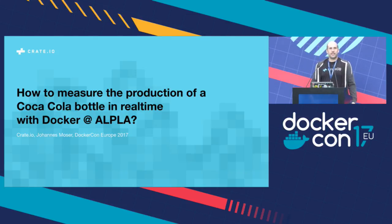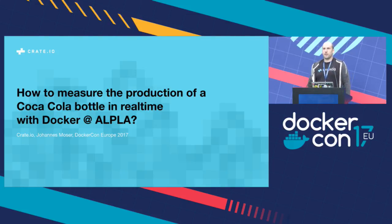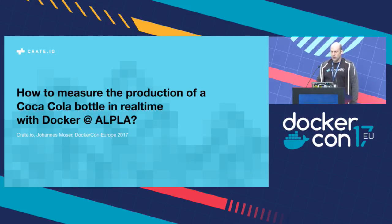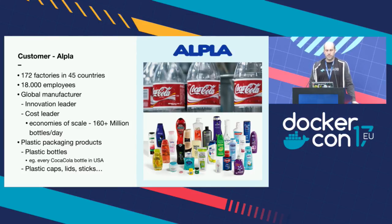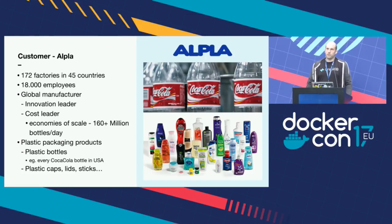Crate.io is basically a distributed SQL database that easily scales. But this presentation is not about Crate — it's about a customer use case. It's about how we implemented with Altler to measure the production of a Coca-Cola bottle in real time. Our customer Altler has about 180 factories around the world, employs 18,000 people. They are a global manufacturer, an innovation leader, a cost leader, and they live the economics of scale.